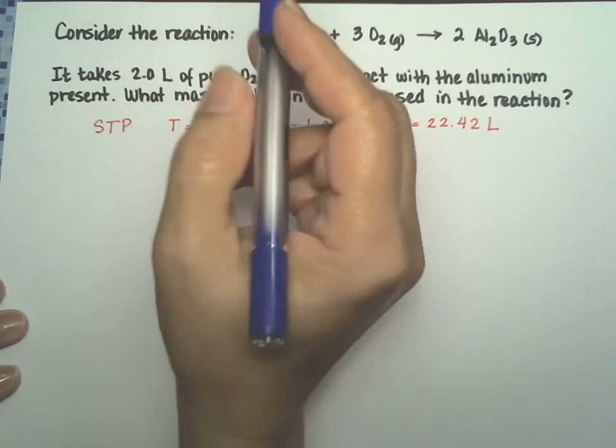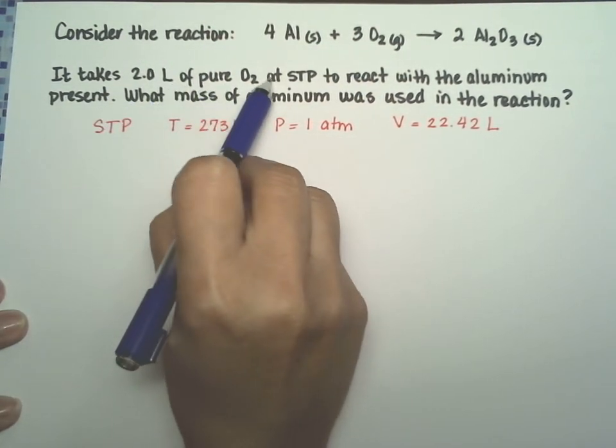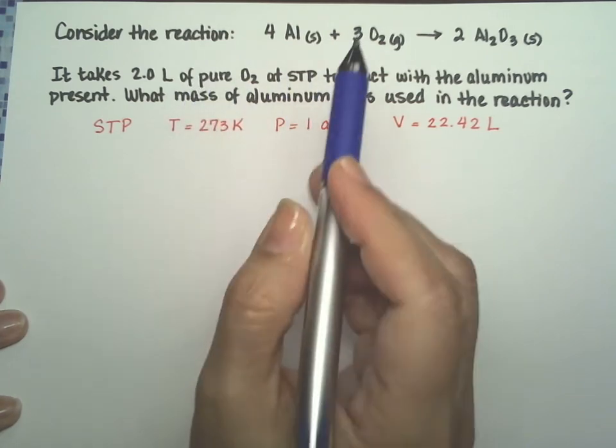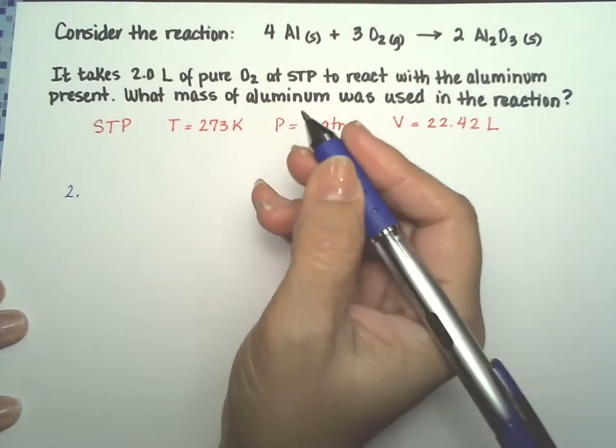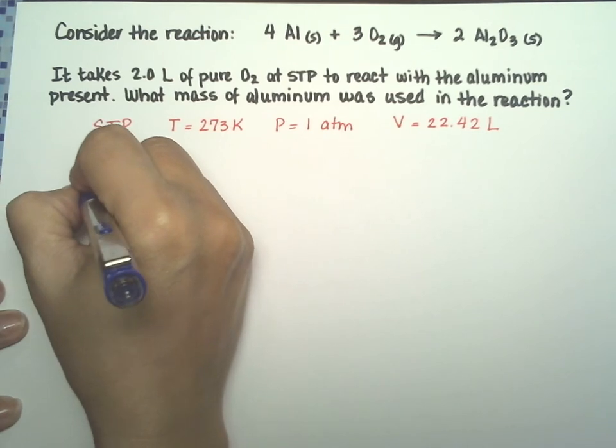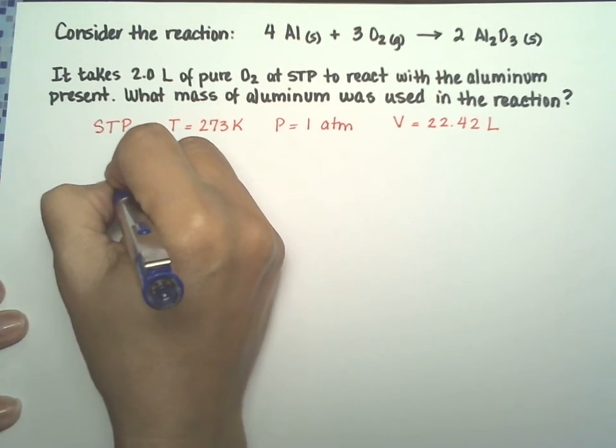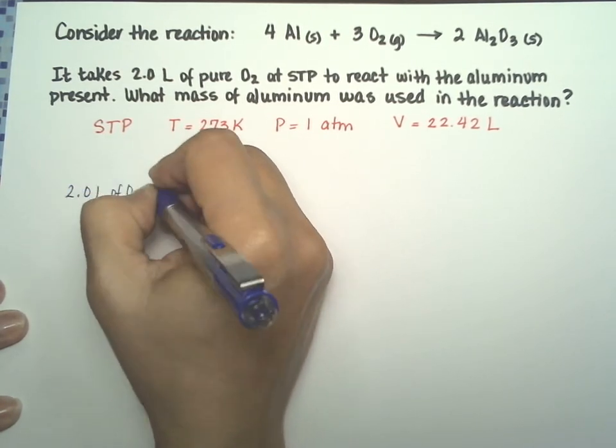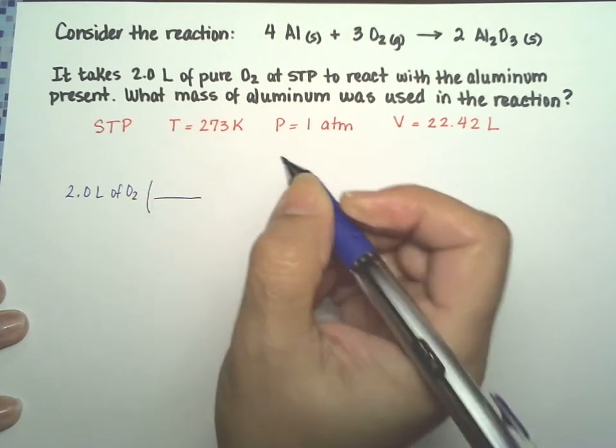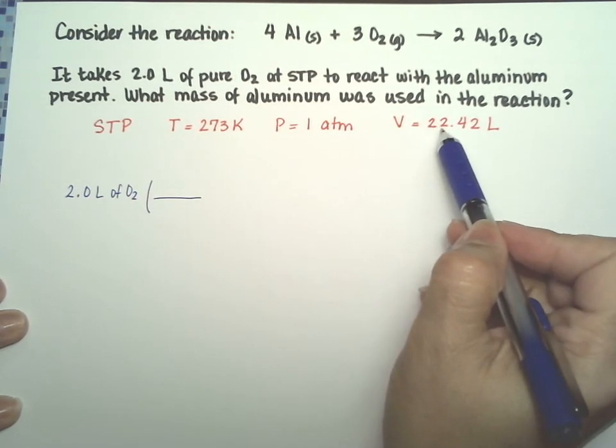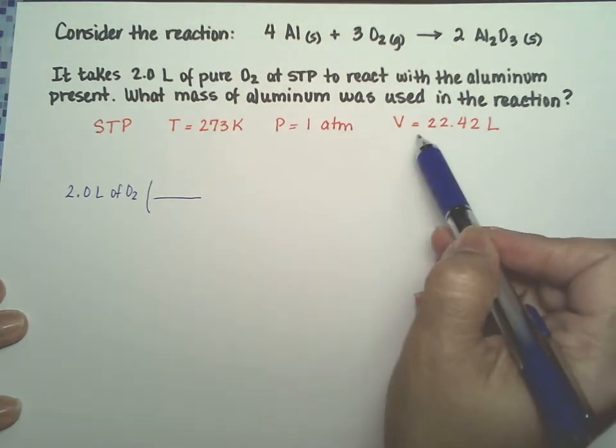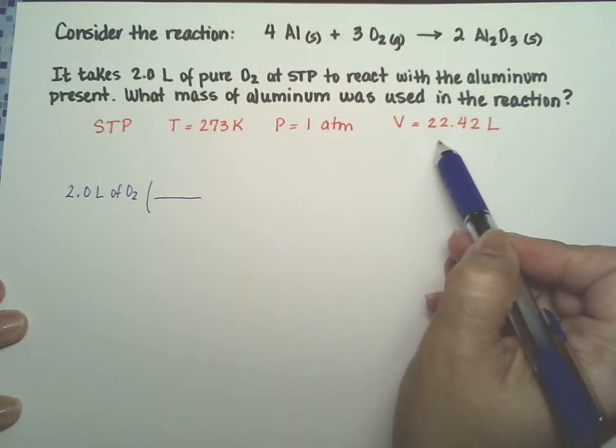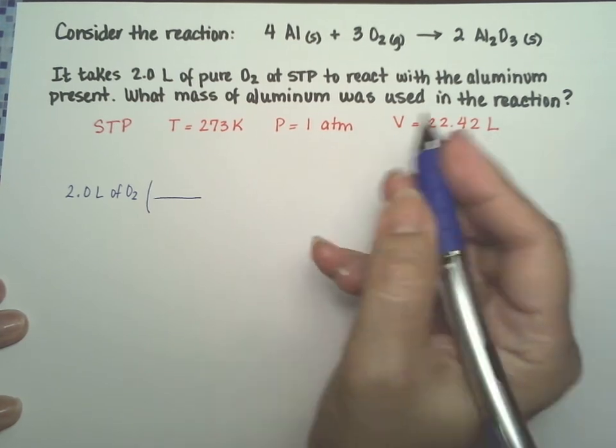Alright, let's start with the two liters of pure oxygen right here because that's what they tell us that reacts with all the aluminum. So two liters of oxygen gas. Now I know that 22.42 liters of oxygen is one mole of oxygen.